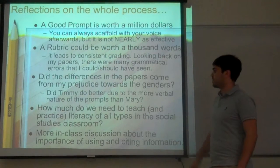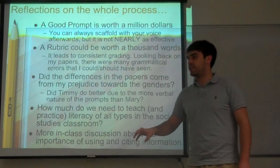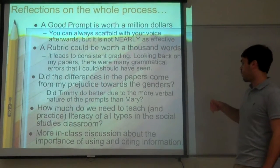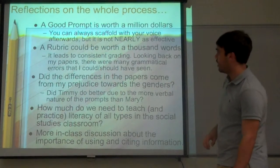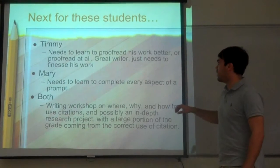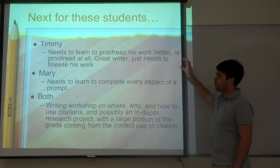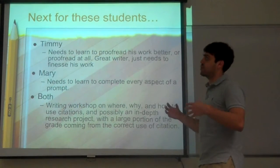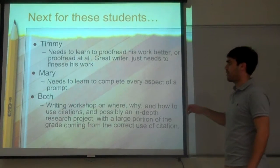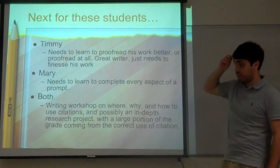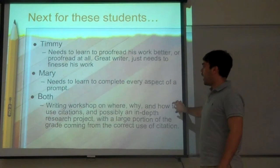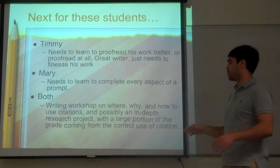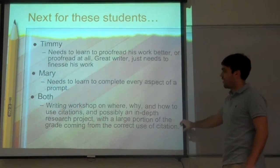This raises the question of what would happen next with both students, and the need for more in-class discussion about the importance of using and citing information. Timmy needs to learn to proofread his work — or proofread at all. Interestingly, the in-class writing for both of them was actually better written than most of their typed work. Mary needs to learn to complete every aspect of a prompt, as she left things out each time. For both, a writing workshop on where, why, and how to use citations — combined with a large research project weighting citations and evidence — would be beneficial.